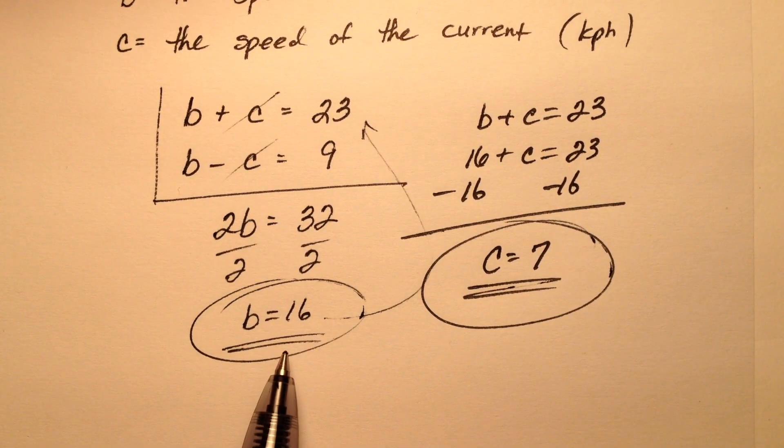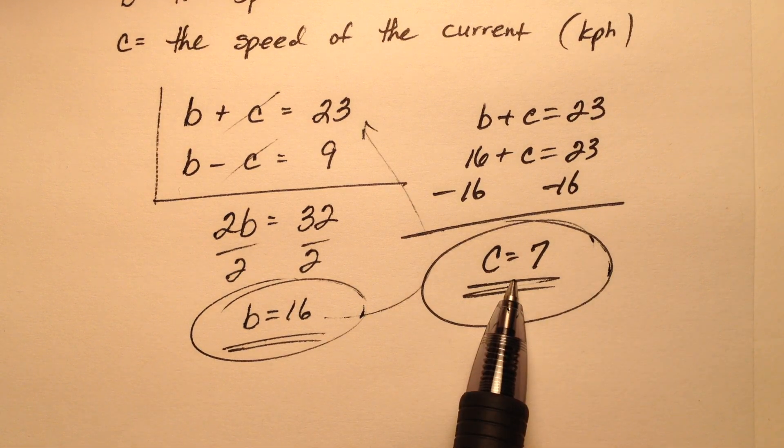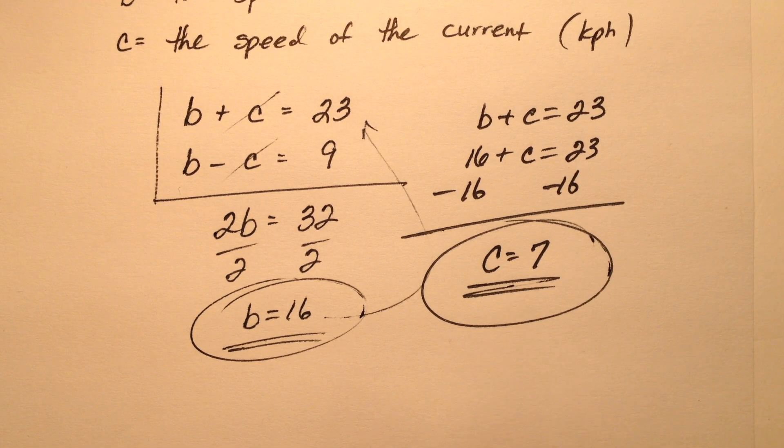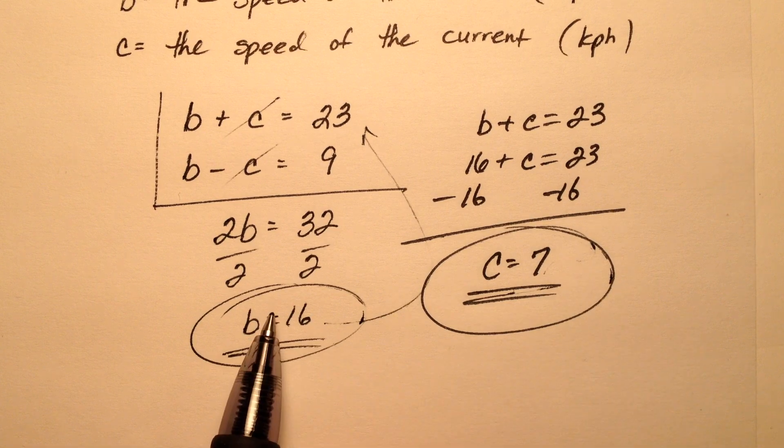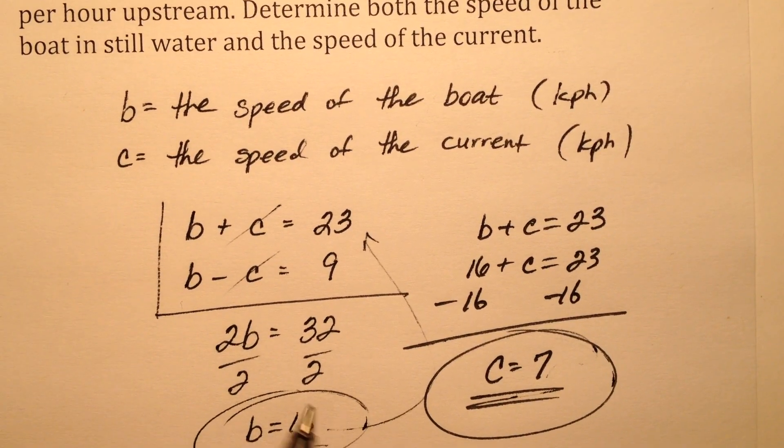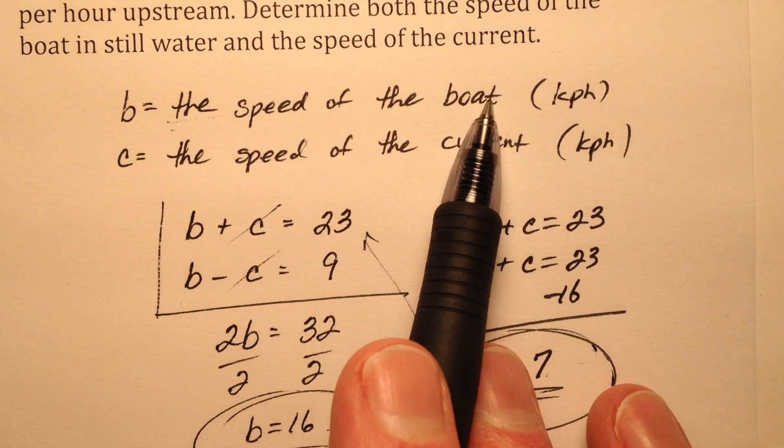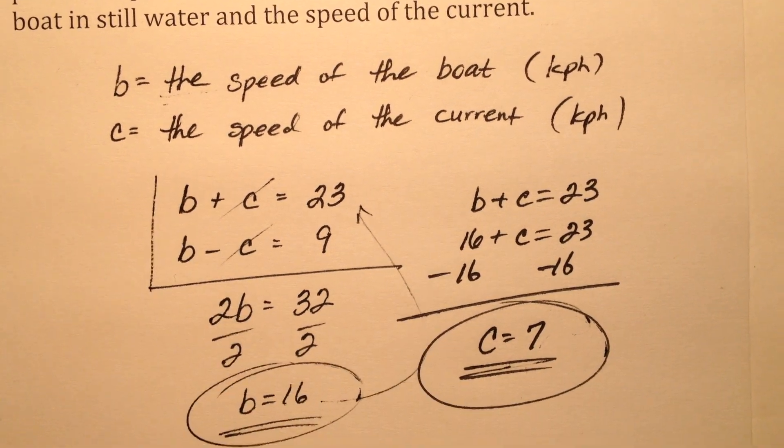Now that I have values for both b and c, I need to write a sentence to summarize what's going on and make sense of the answer. What was b? When we go back to our variable definitions, b was the speed of the boat, and c was the speed of the current.